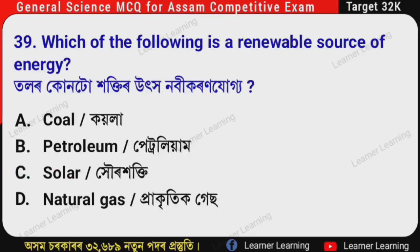Next question: Which of the following is a renewable source of energy? (Assamese: Tonor konto hokti r uccha nao bhi koron jugga?) The correct option is Option C — Solar energy. Solar energy is a renewable source of energy.